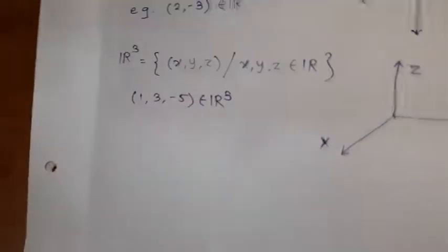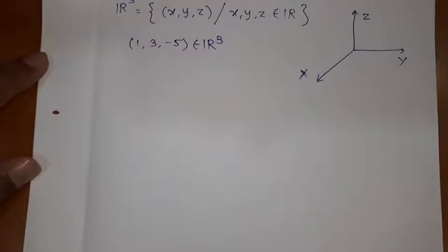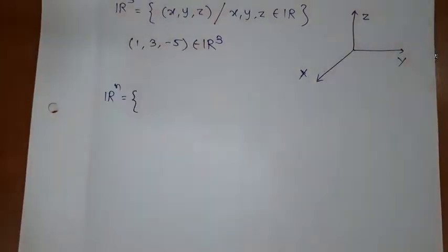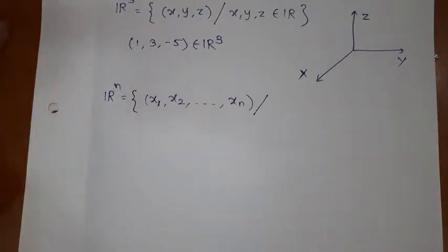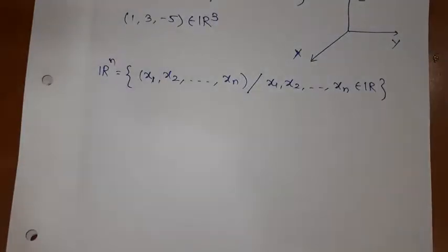Euclidean space R^n is a generalization of this concept. Actually, we cannot draw the diagram here. R^n means obviously you have n number of components where all these are real numbers.